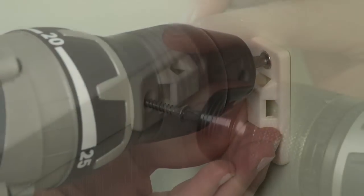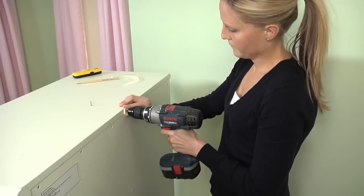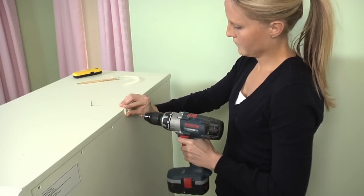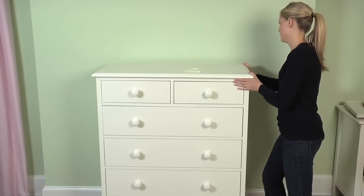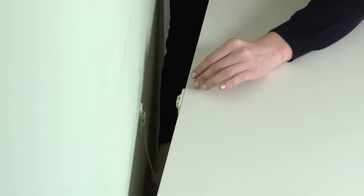Then attach the second bracket horizontally to the top of the furnishing using the provided screws. Move the furnishing back to the wall, leaving a small gap between the brackets. Use the included strap to fasten the brackets together.